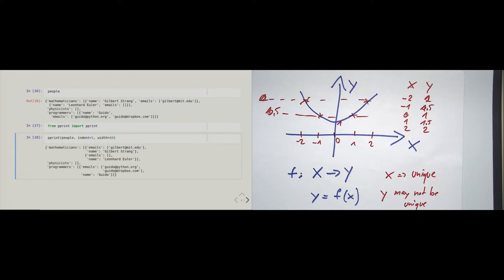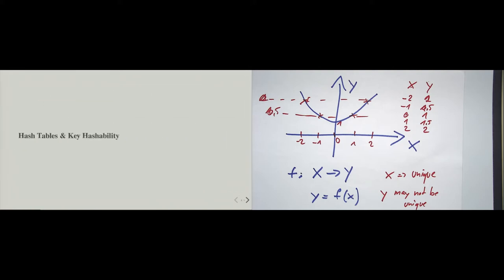So at the end of the day, what we have here is like a directory — a directory of people and ways to contact them. The question is, since we care about this in this course, how are dictionaries modeled in memory? How do they work in memory? Let's look at first some observations we make, and then I will tell you how they work.